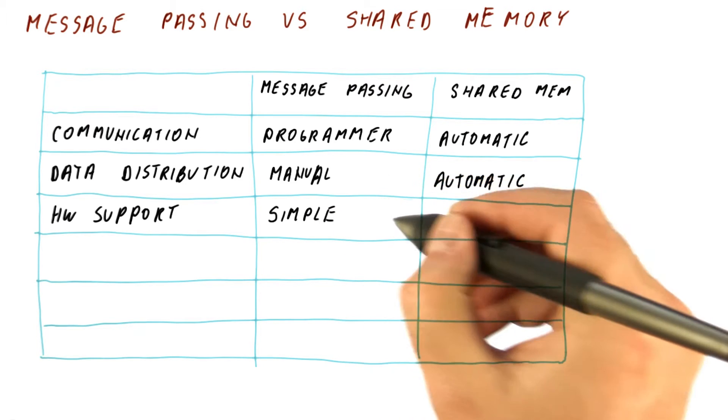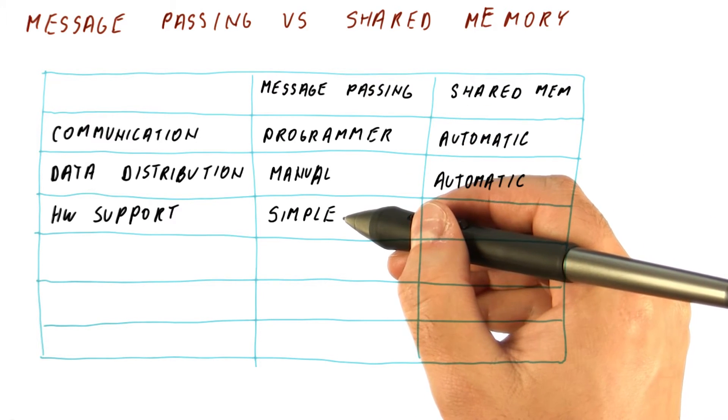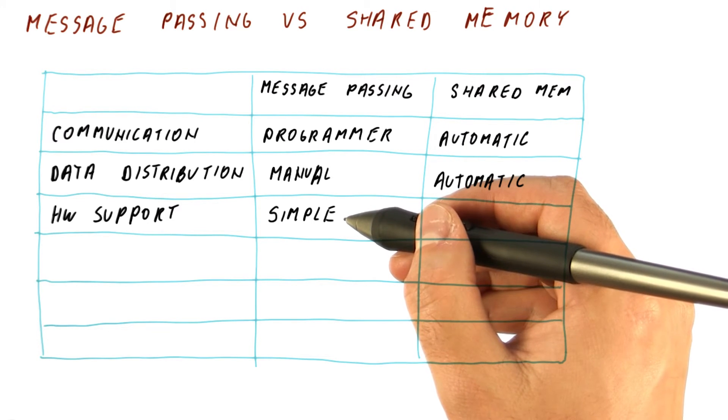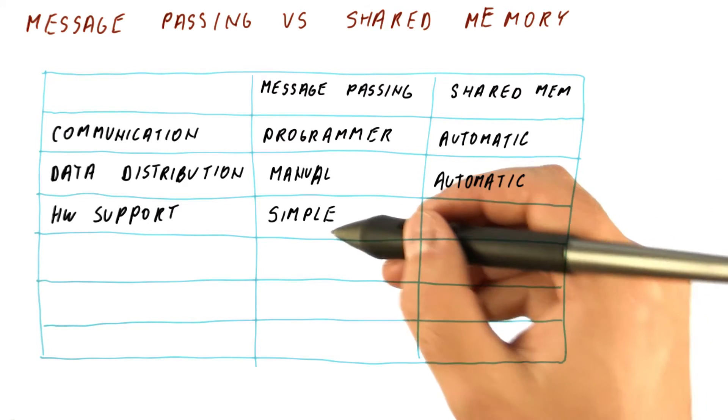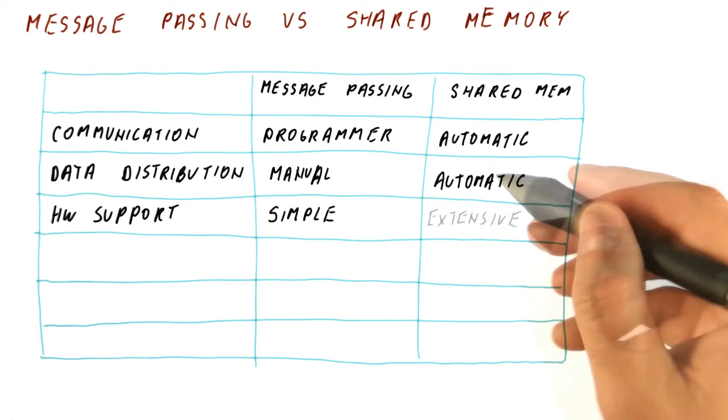As far as how much hardware support we need, for message passing, this support is relatively simple. We just need to basically have a network card and a network. It can be a very fancy network, but it's just a network.